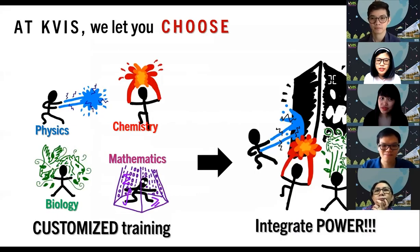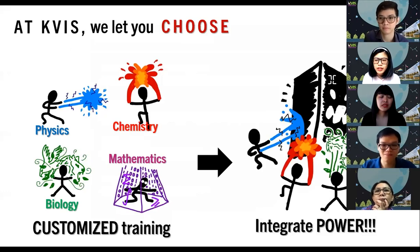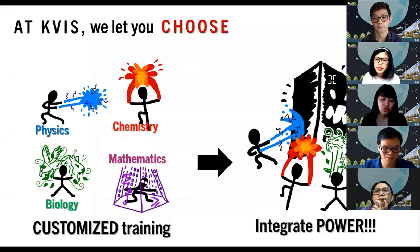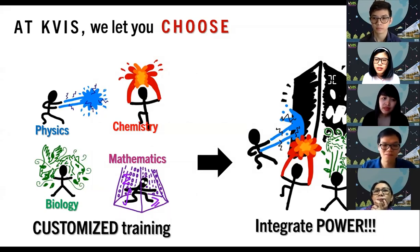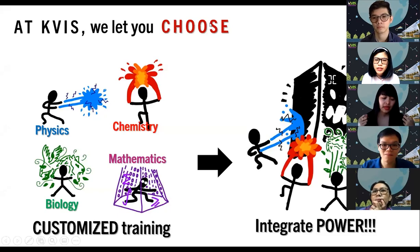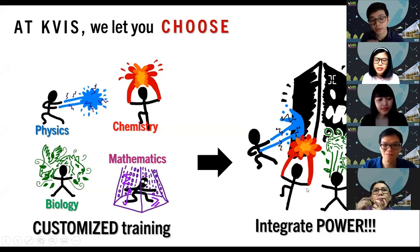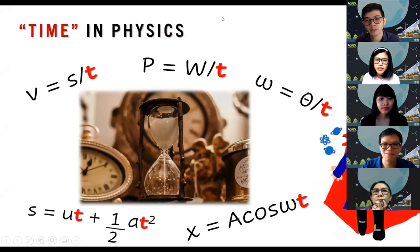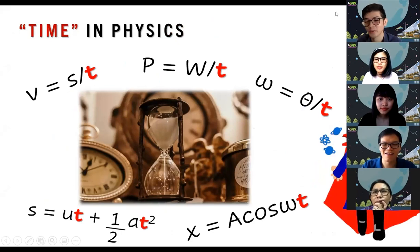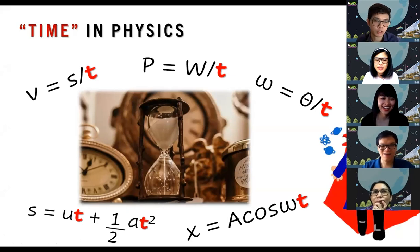At KVIS, as Teacher Smart mentioned, you can choose your own path — we support the customized curriculum. You can choose whichever subject you like most: physics, chemistry, biology, mathematics, or computer science. You can use your knowledge, integrate it all together, solve problems, and create new things. For today, because we have limited time — only 20 minutes total — we chose a topic that links physics, biology, and chemistry all together: time.